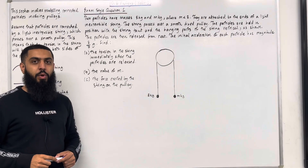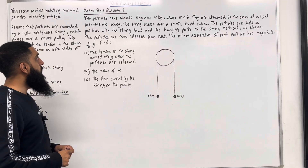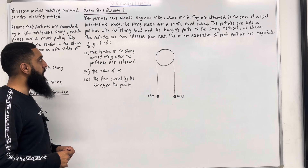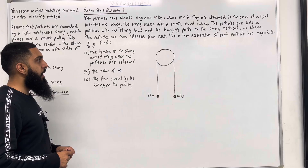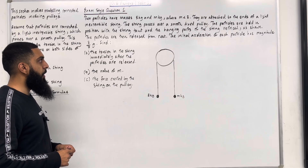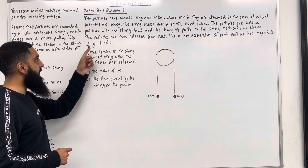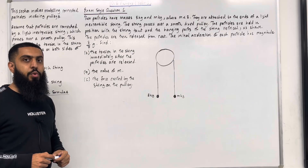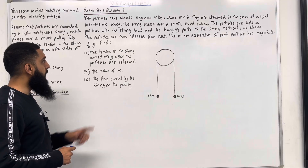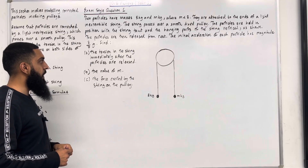Here is exam style question 1. Two particles have masses 3 kg and m kg, where m is less than 3. They are attached to the ends of a light and inextensible string. The string passes over a smooth fixed pulley. The particles are held in position with the string taut and the hanging parts of the string vertical. The particles are then released from rest. The initial acceleration of each particle has magnitude 3/7 g, where g is acceleration due to gravity, g = 9.8 m/s². Find part A: the tension in the string immediately after the particles are released.